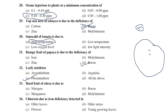Hard rind of citrus is due to boron deficiency. Among nitrogen, boron, manganese, and molybdenum, the answer is boron deficiency.